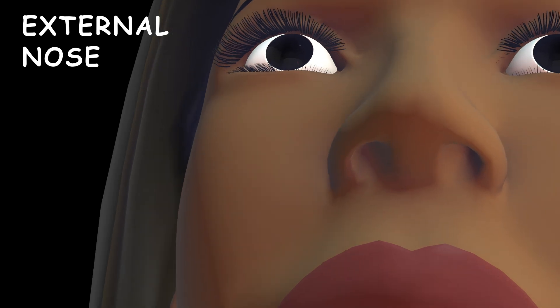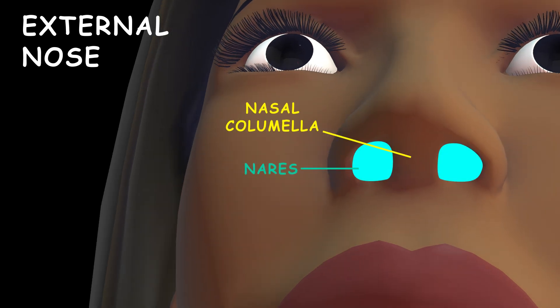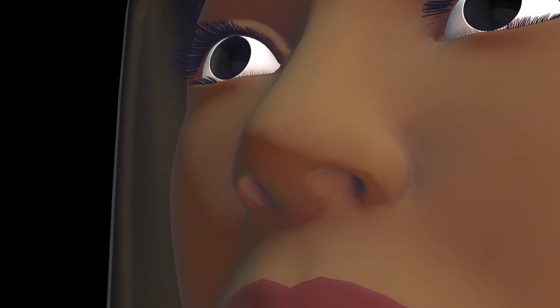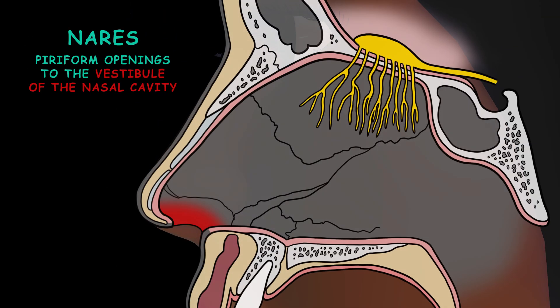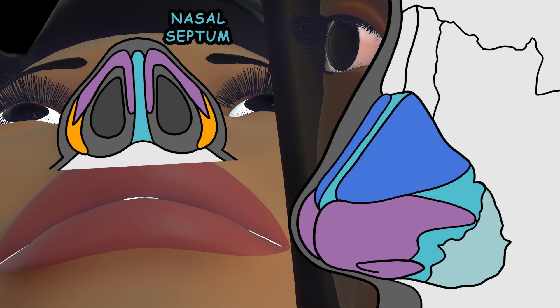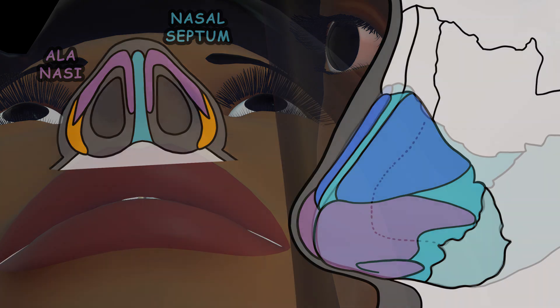Your nostrils are called the nares. The nasal columella is the tissue that separates the nares, connecting the nasal tip to the nasal base. The nares are piriform openings to the vestibule of the nasal cavity. The nasal septum binds them medially, while the alae nasi, which are cartilaginous wings, bind them laterally.